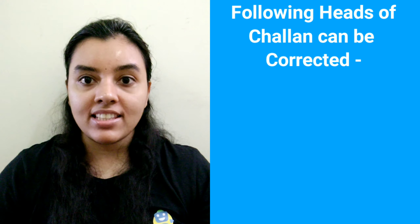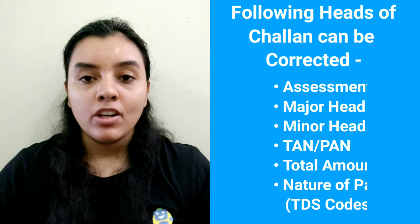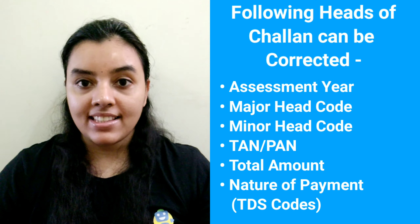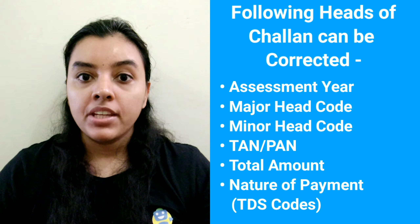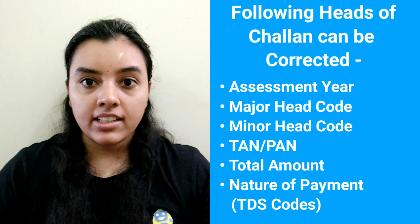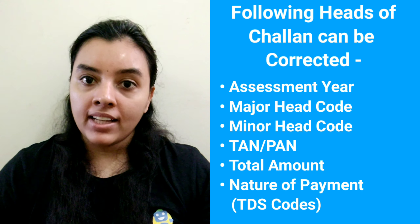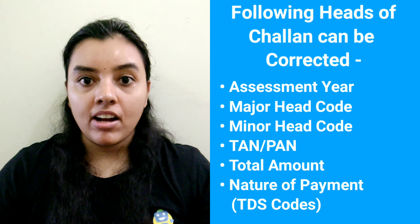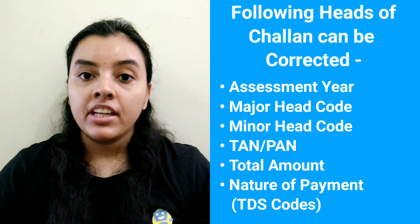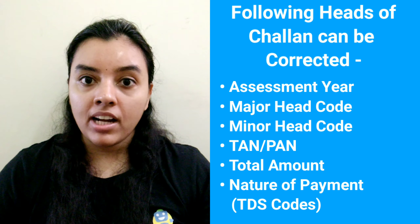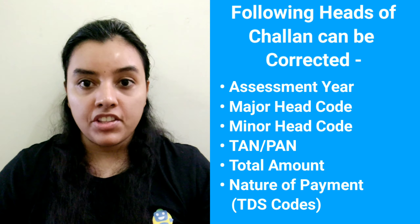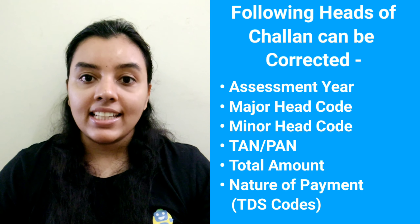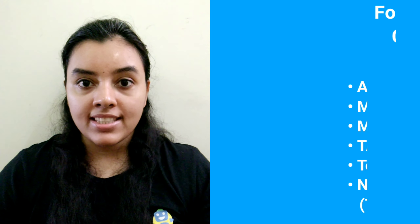The following heads of the challan which can be corrected are: the payment, assessment year, major head code, minor head code, TAN or PAN, total amount, and nature of payment, i.e. TDS codes.